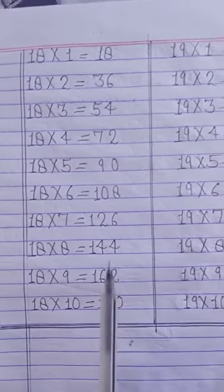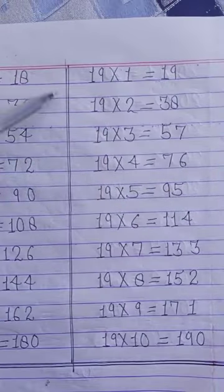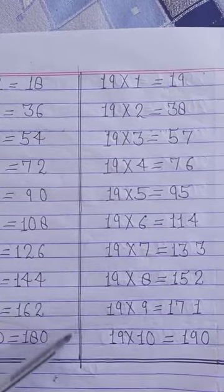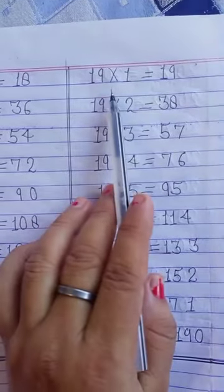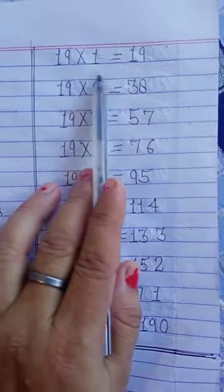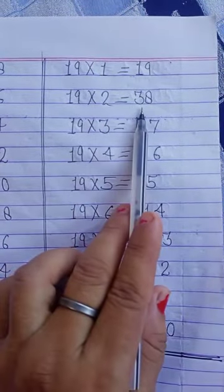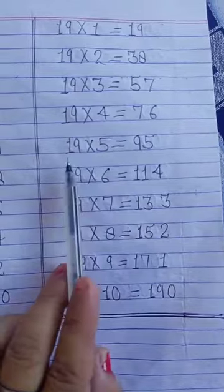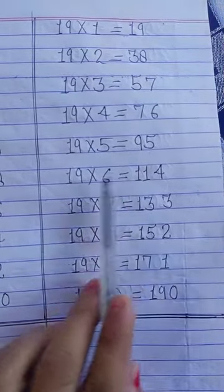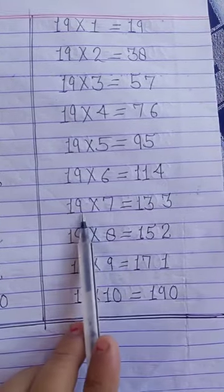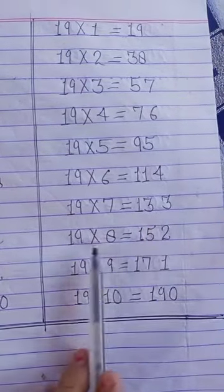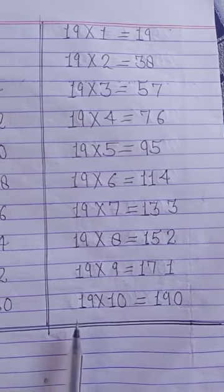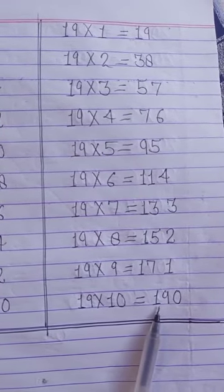Now after table of 18 you write table of 19. Firstly you draw line between table 18 and 19. You write table of 19, then you start. 19 ones are 19. 19 twos are 38. 19 threes are 57. 19 fours are 76. 19 fives are 95. 19 sixes are 114. 19 sevens are 133. 19 eights are 152. 19 nines are 171. 19 tens are 190.